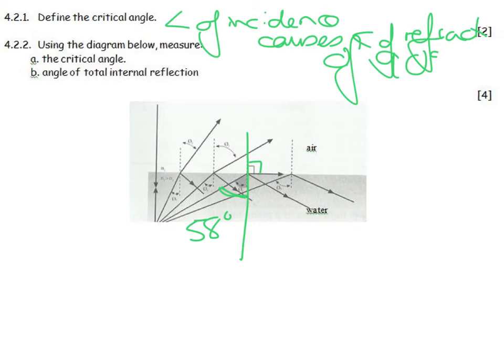The next one is, what is the angle of total internal reflection? Here is my angle of incidence, and that is my angle of reflection. And when I measure that, it is 67 degrees.